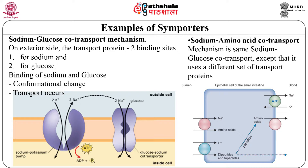Not all co-transporters utilize Na+ as the driving ion. Some use an existing proton electrochemical gradient. An example is the H+/oligopeptide transporter found in the small intestine. It couples the downhill movement of H+ across the plasma membrane to the uphill transport of dipeptides and tripeptides into the cell against the concentration gradient.